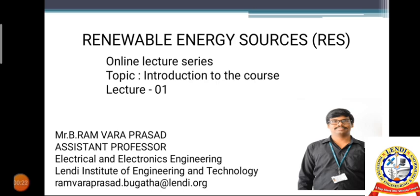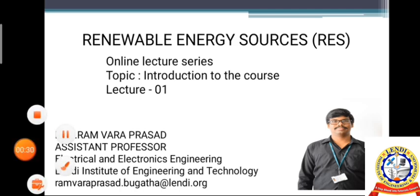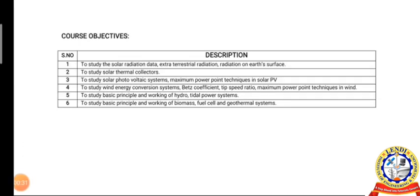Before entering into the subject deeply, we will discuss the course objectives and course outcomes of this course. We have 6 course objectives. CO1: to study the solar radiation data, extraterrestrial data, and radiation on Earth's surface.